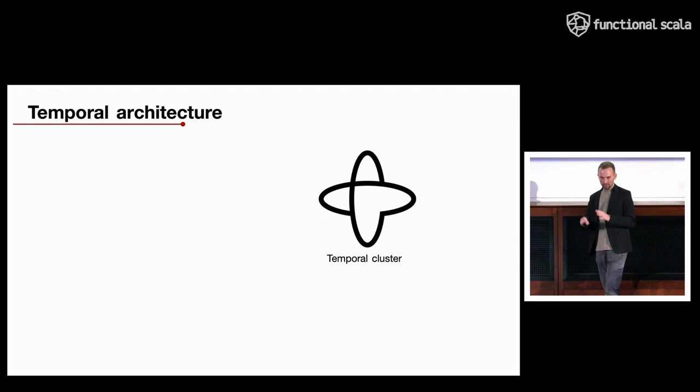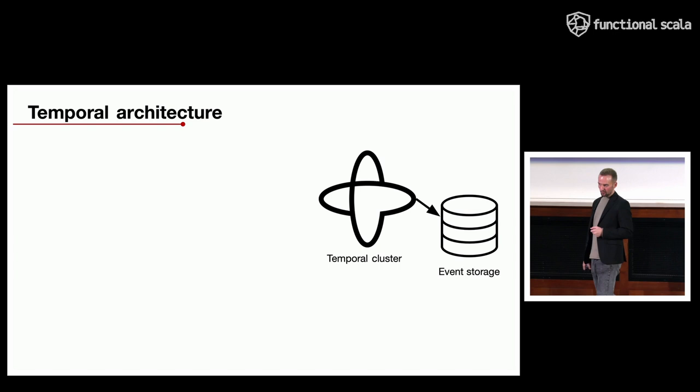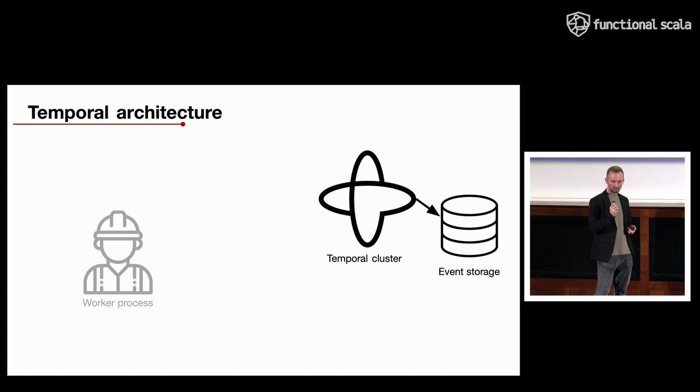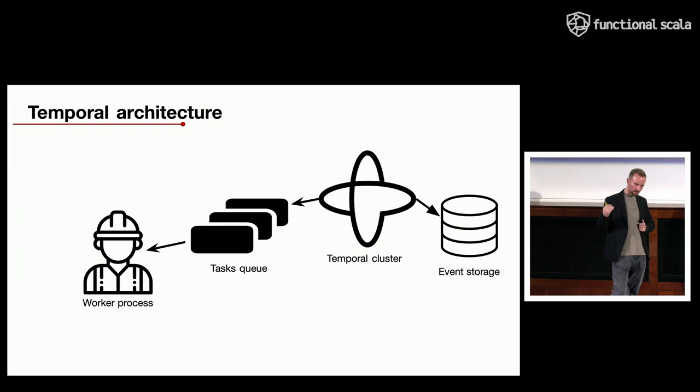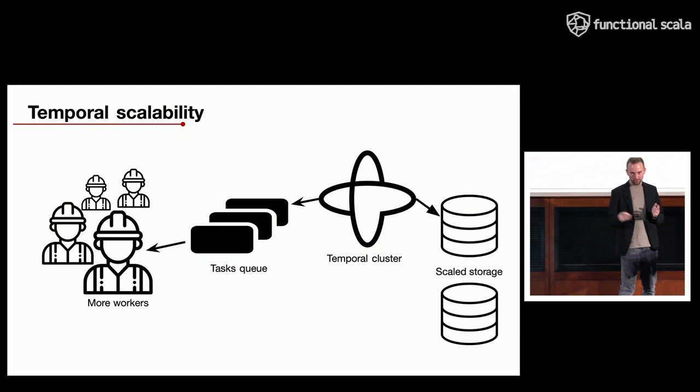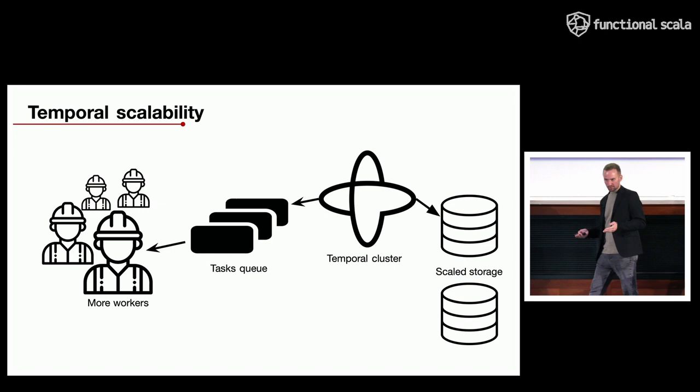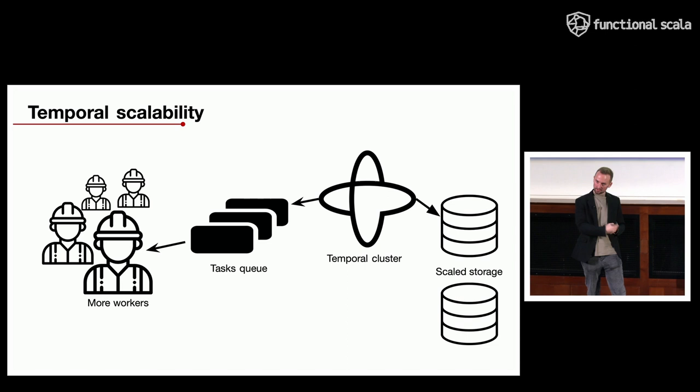The Temporal platform itself consists of a cluster which schedules workflow execution, an event storage which stores workflow and activity results, and worker processes which actually execute the workflows we define. Those worker processes pick up workflow tasks from a task queue. To scale, you simply add more data nodes to the storage or add more worker processes to handle more workflows.